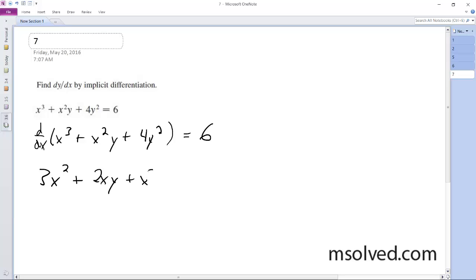plus x squared y prime plus 8 y y prime equals 0. So we're going to subtract everything and get the